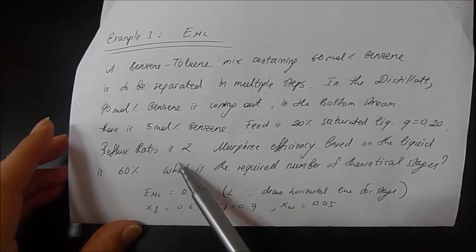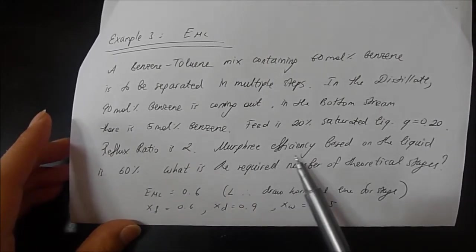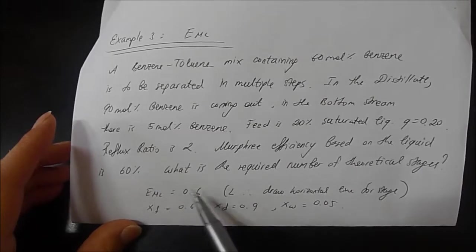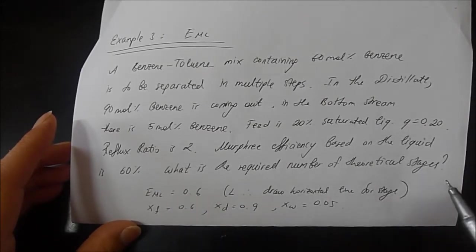Reflux ratio is given, it's 2, and Murphy efficiency based on the liquid is 60%. What is the required number of theoretical stages? Theoretical stage means whatever you actually count.